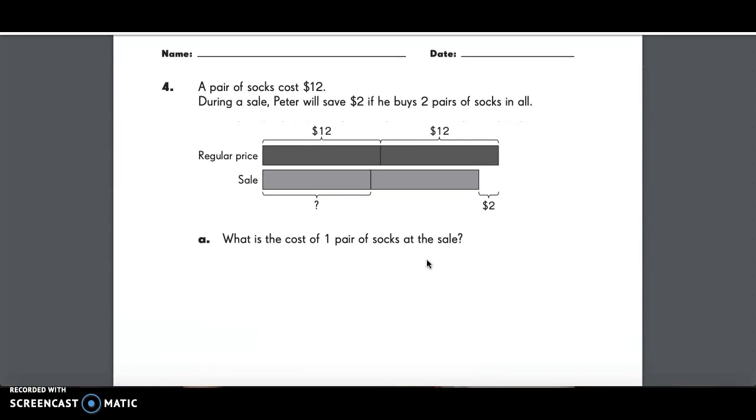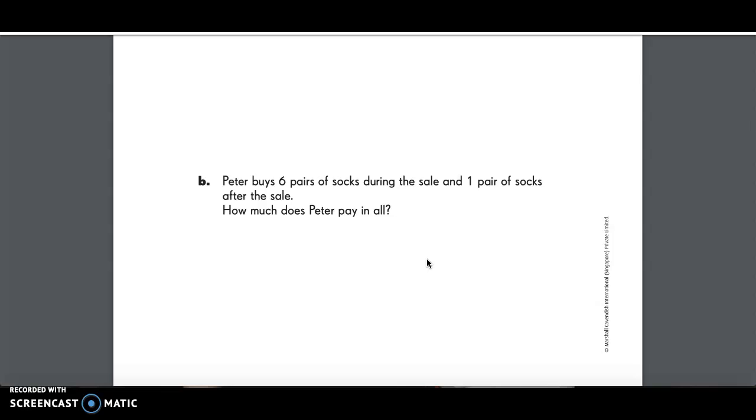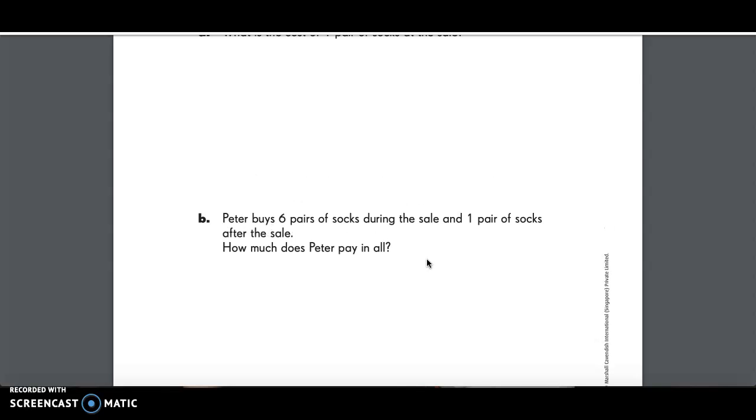Number four, a pair of socks costs $12. During a sale, Peter will save $2 if he buys two pairs of socks in all. What is the cost of one pair of socks at the sale? Part two of that question says Peter buys six pairs of socks during the sale and one pair of socks after the sale. How much does he pay in all?